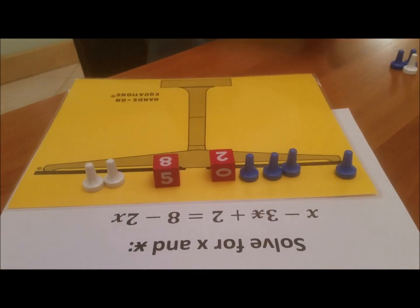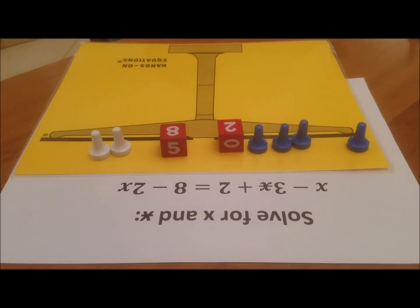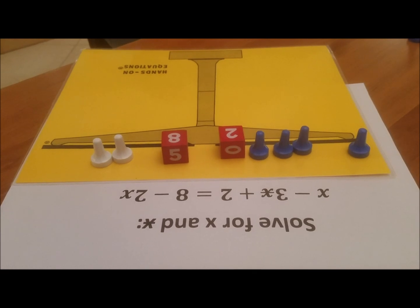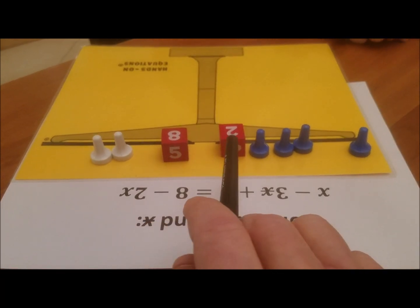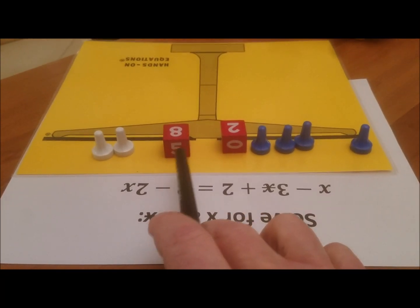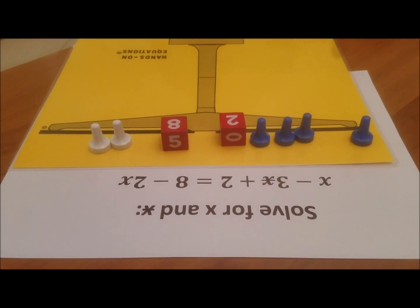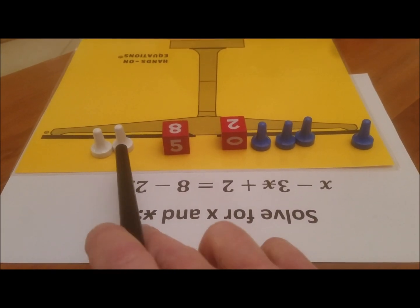Now that we have the equation set up, the question is, do you see any legal moves we can do? My question to you is this: do you want to work with the cubes first? Do you want to remove the white pawns or the blue pawns? Which is your objective, your goal?